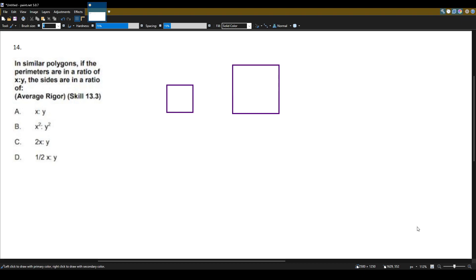So you have two squares. Let's say the perimeter of this first square is 4. And the perimeter of the second square, let's say it's 8. So that means that each side is 1, 1, 1, 1 for this first square. And it's 2, 2, 2, 2 for the second square.